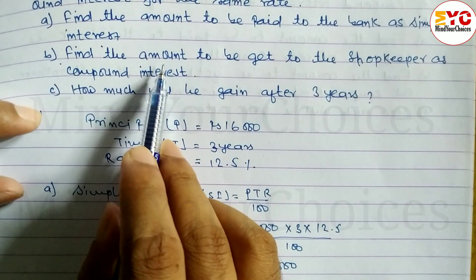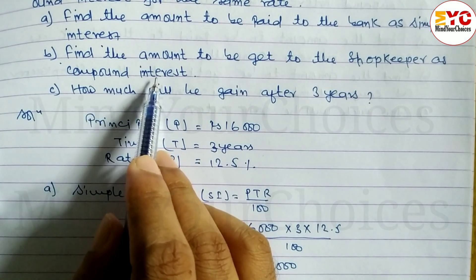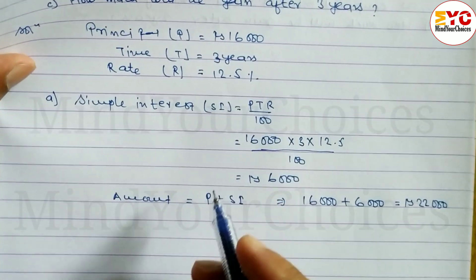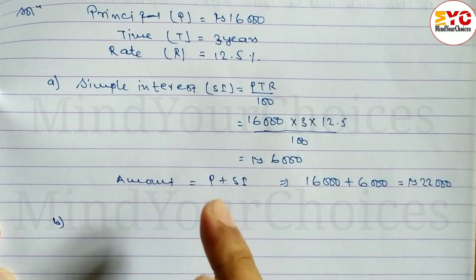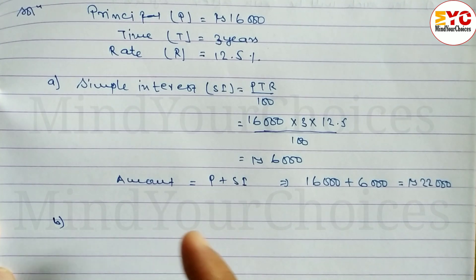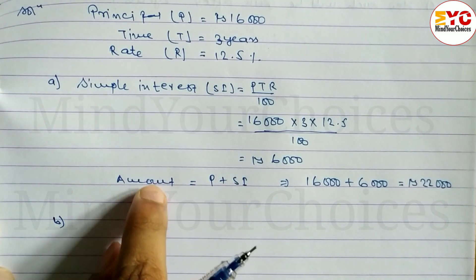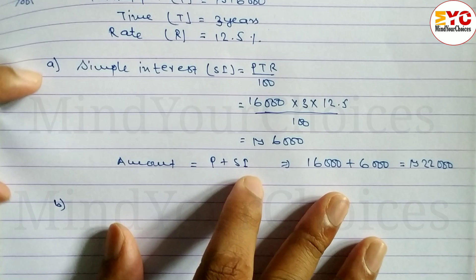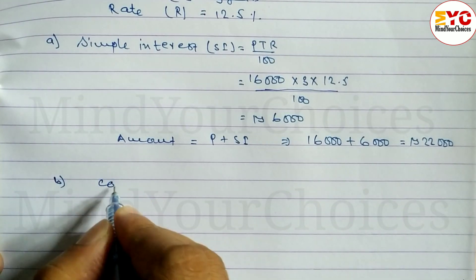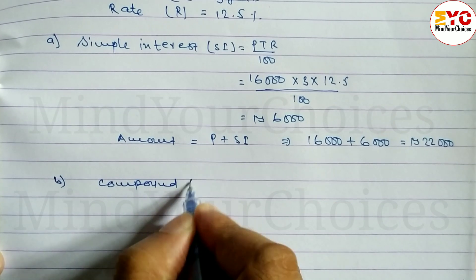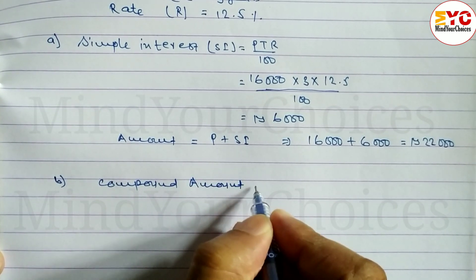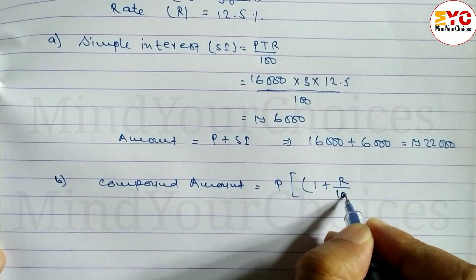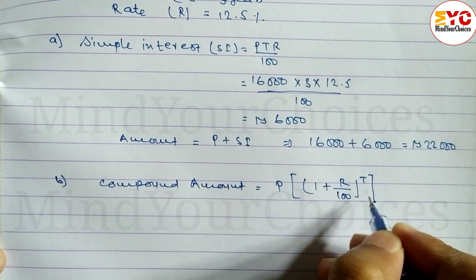For part (b), we need to find the compound amount. We can use the compound amount formula: CA = P(1 + R/100)^T.